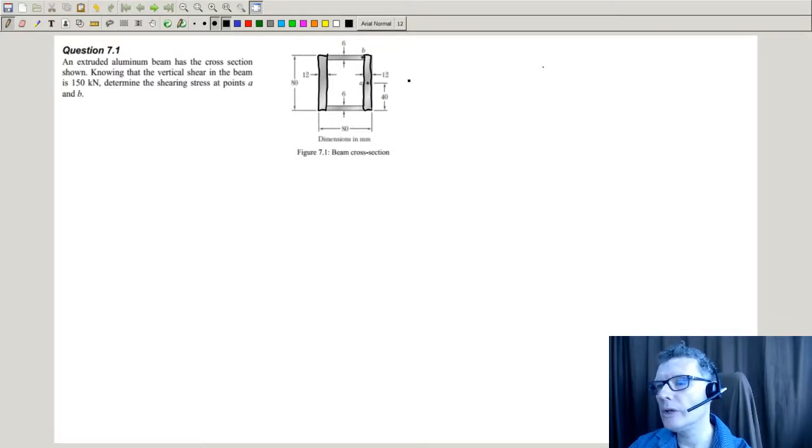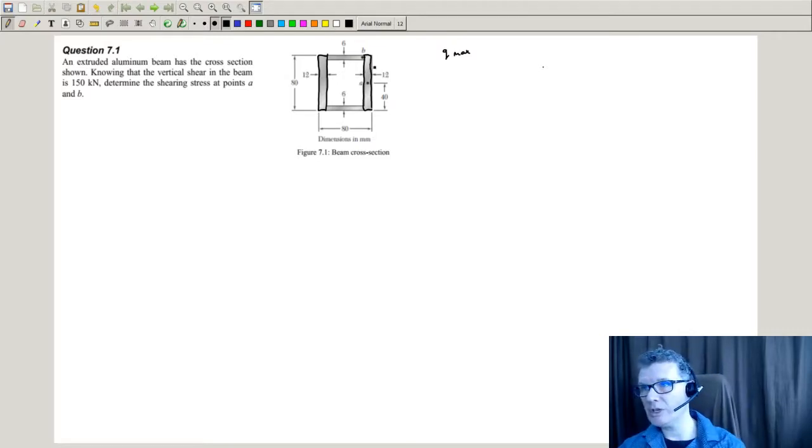So we're looking for A, which is going to be in the middle. That's going to give me the maximum shear flow and therefore the maximum shear stress. And B, which will be the point where I'm imagining this vertical plate is joining this horizontal plate.